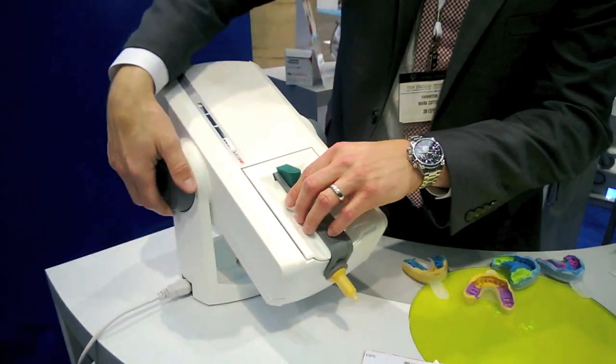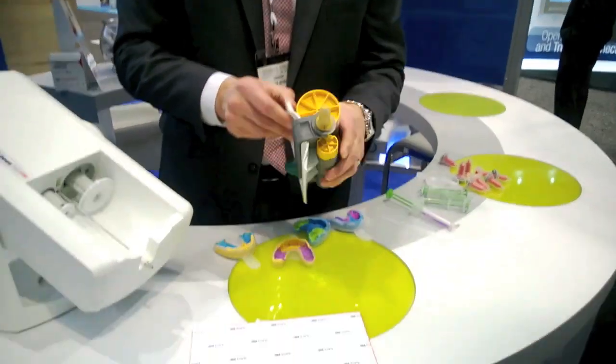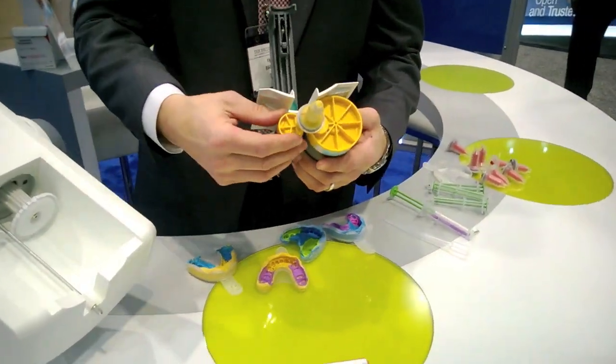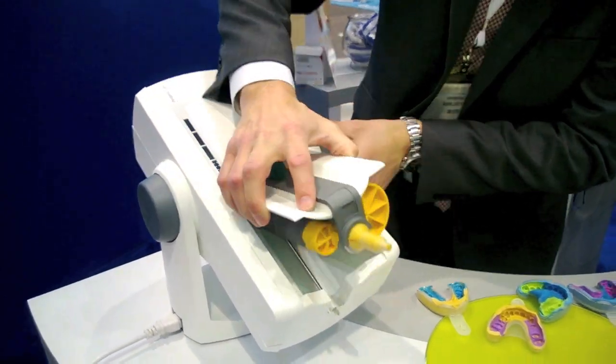Getting started is very simple and very easy. You want to pull back the plungers, pull the machine up, load your Pentamix cartridges in, simply snap it back, and pull the plungers back in place.